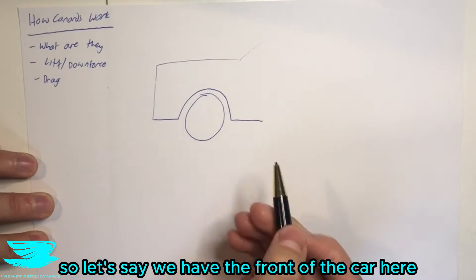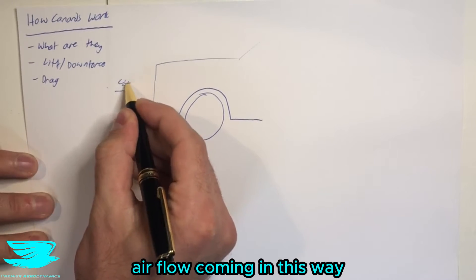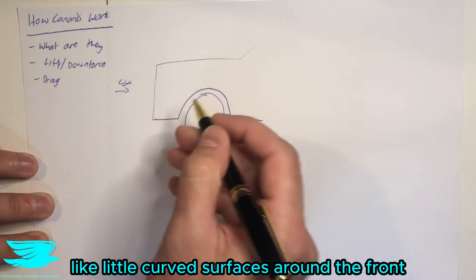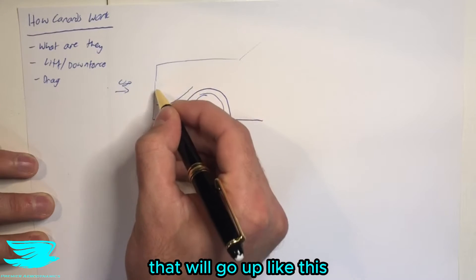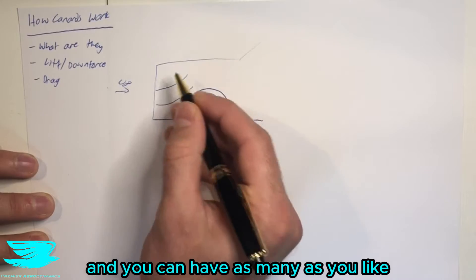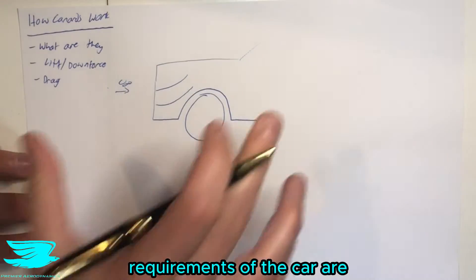So first of all, what are canards? Let's say we have a front of the car here, and we have the freestream flow coming in this way. They are these little curved surfaces around the front that will go up like this, and you can have as many as you like, or as few as you like, or none, depending on what the requirements are for the car.